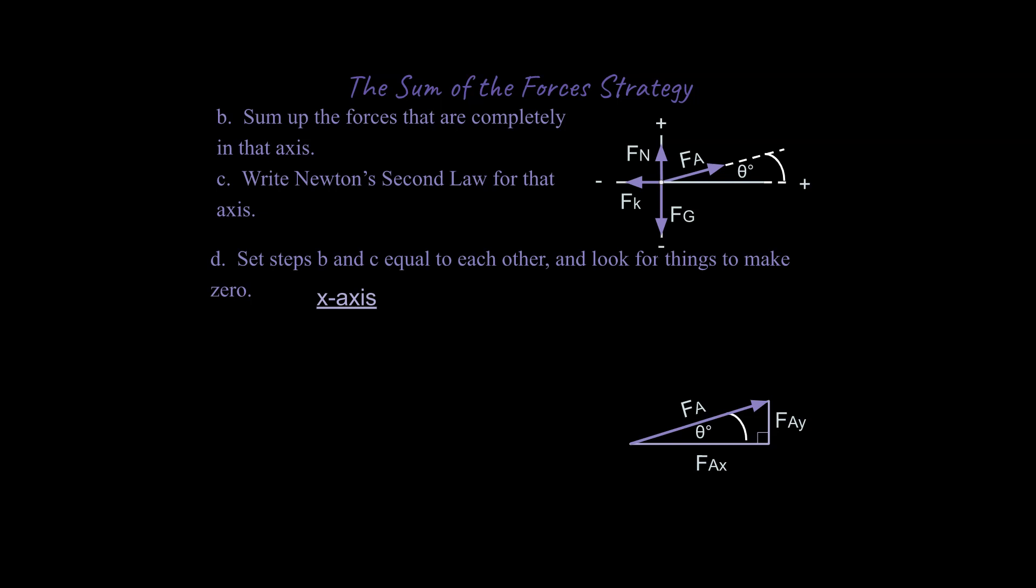So let me show you how this works. For our second step we're going to sum up the forces that are completely in that axis. Step c says write Newton's second law for that axis and step d says set steps b and c equal to each other and look for things to make zero. So let's take a look.